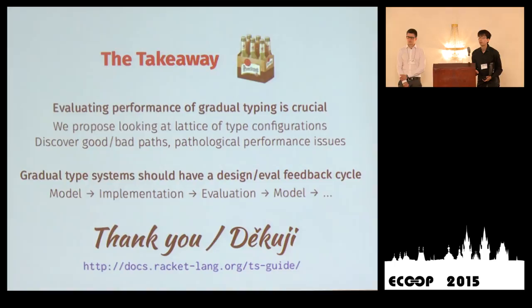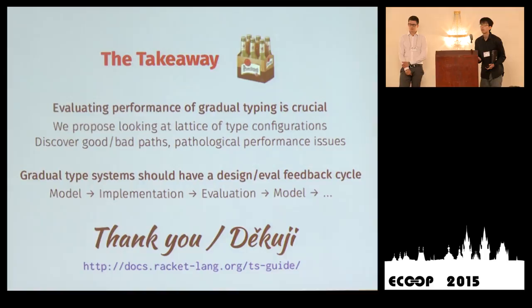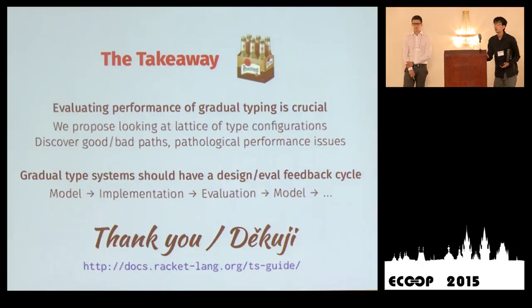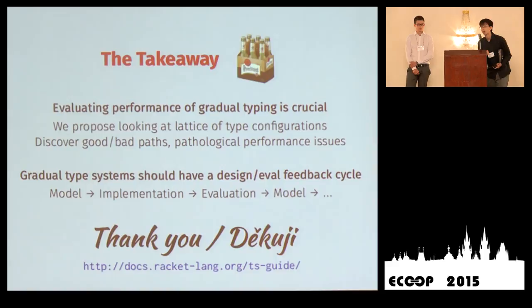Question about the claim that wrappers are needed for soundness: the questioner noted that objects are already encapsulated, so wrappers might not be needed for soundness. Response: soundness in this context includes blame tracking — ensuring blame always goes to the correct party — and without wrappers it's very difficult to assign blame to the right modules. The questioner suggested a trade-off: eliminate some runtime checks for performance, turn them back on if errors appear. Response: as PL researchers, the goal is the best possible soundness; compromises can be made if that completely fails.